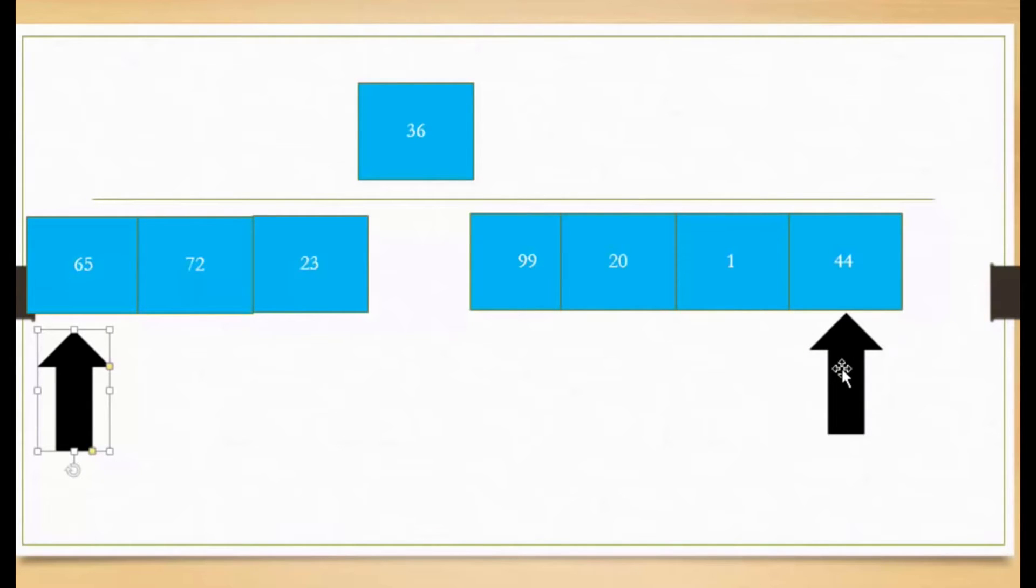And if both of these pointers, arrows, are pointing to an element that is less than the pivot at the top and greater than the pivot at the bottom, I'm going to swap them. And if not, I continue looking at the next reference.